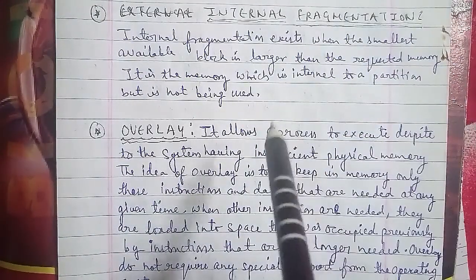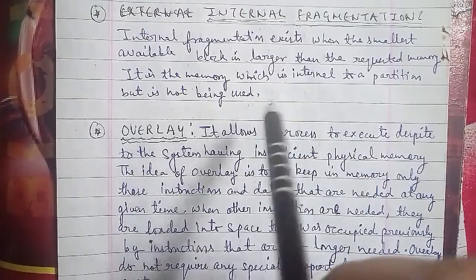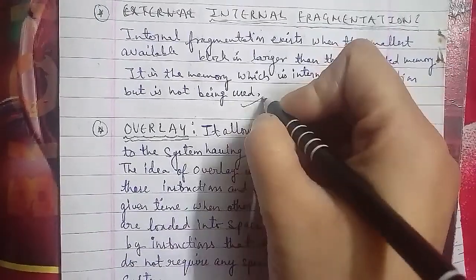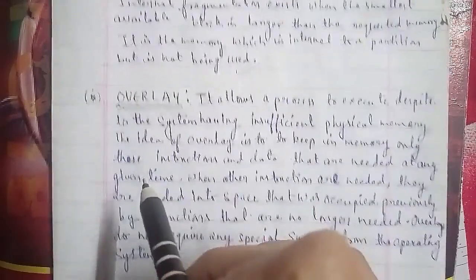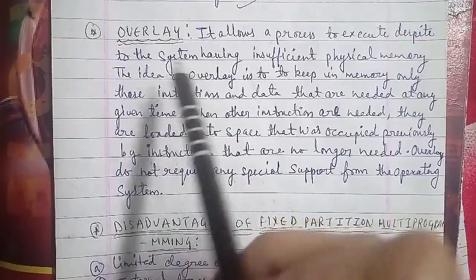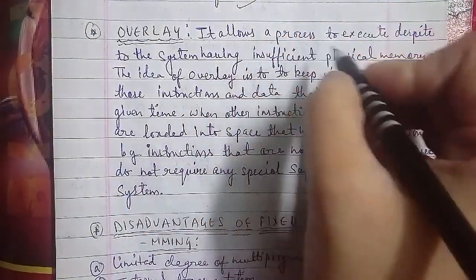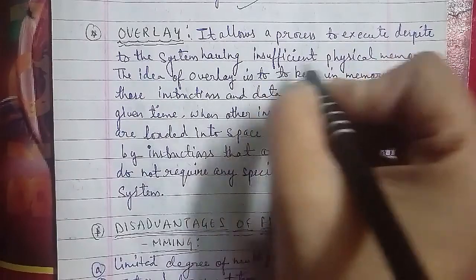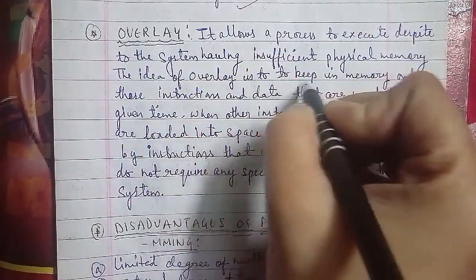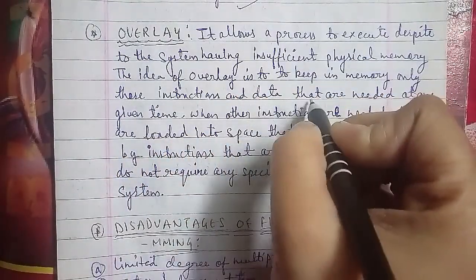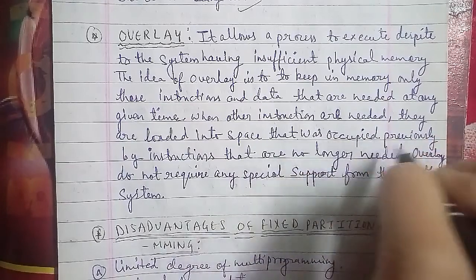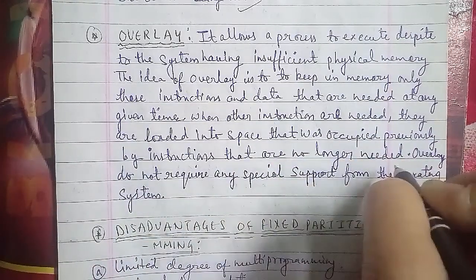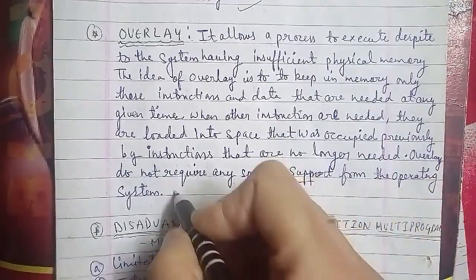The next topic is overlays. Overlays allow a process to execute despite the system having insufficient physical memory. The idea of overlays is to keep in memory only those instructions and data that are needed at any given time. When other instructions are needed, they are loaded into the space previously occupied by instructions that are no longer needed. Overlays do not require any special support from the operating system.